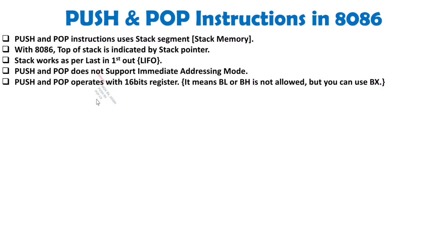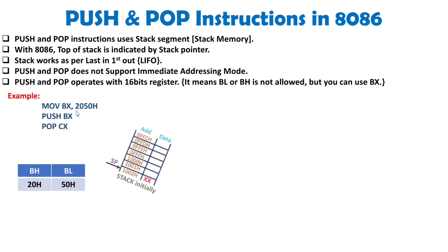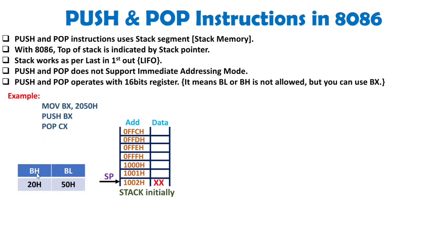Let us understand this with an example. If I write MOV BX, 2050H, I will be loading BX with 2050 hex first. Then when I do PUSH BX, the value of BX — which is 2050 hex — will be loaded onto stack memory. After that, when I write POP CX, the data on stack memory will move into CX. BX is a combination of BH and BL: BH will have 20 hex and BL will have 50 hex.